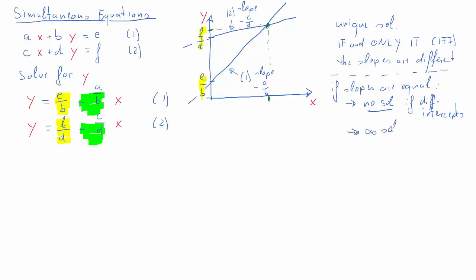The second case is where we have an infinity of solutions, and that's the case where the slopes and indeed the intercepts are equal. That means both equations represent basically the same line.